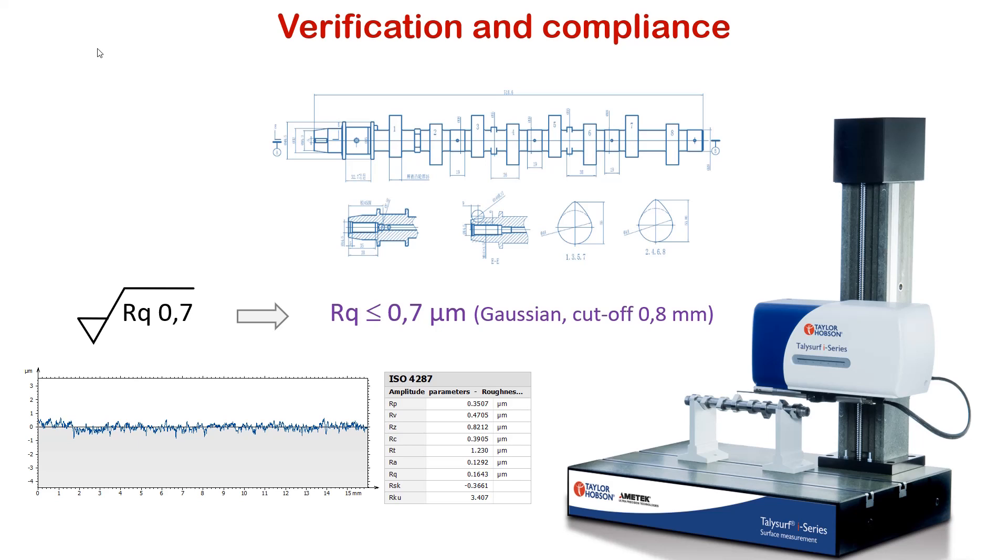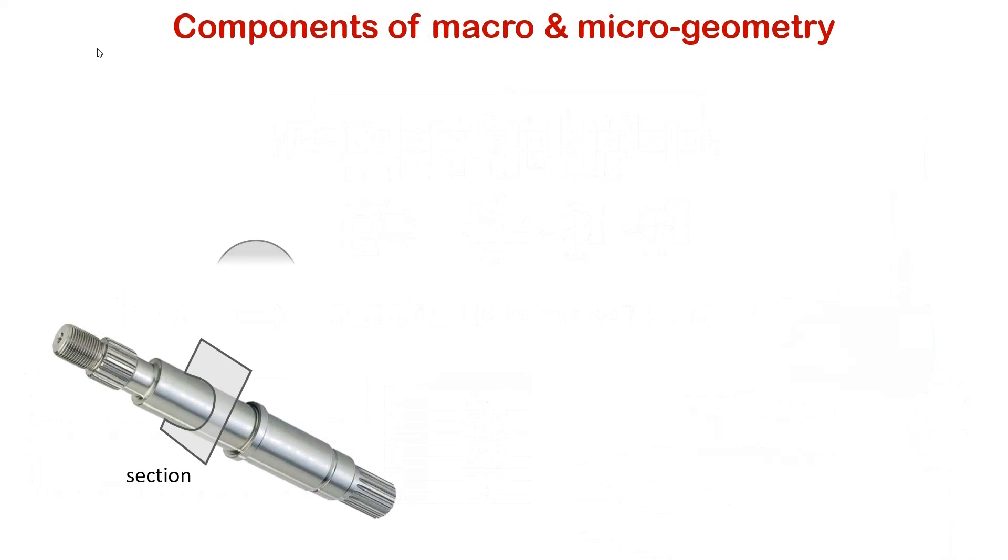When checking surface texture of a workpiece, a measurement is made at a location indicated on the drawing, generally a limited portion considered as representative of the surface to check. For example, a profile is measured on a portion of a drive shaft. What is measured, materialized by the profile, is actually composed of several surface texture components that are treated differently in surface texture analysis.